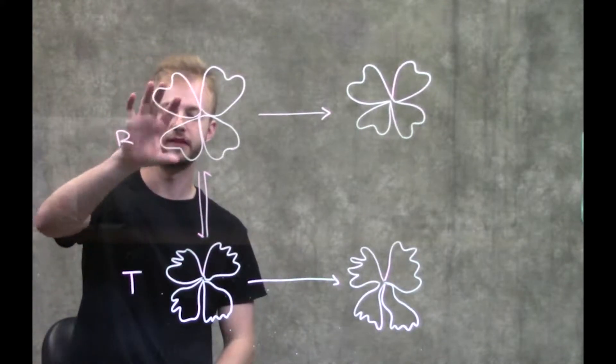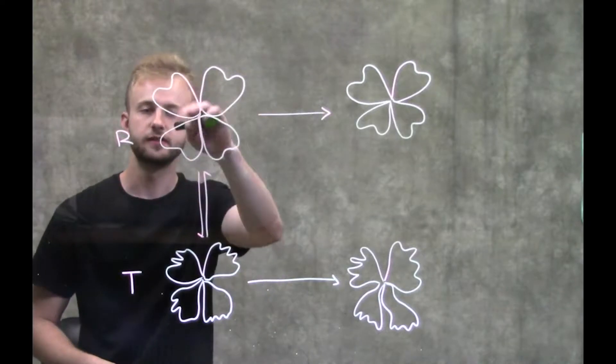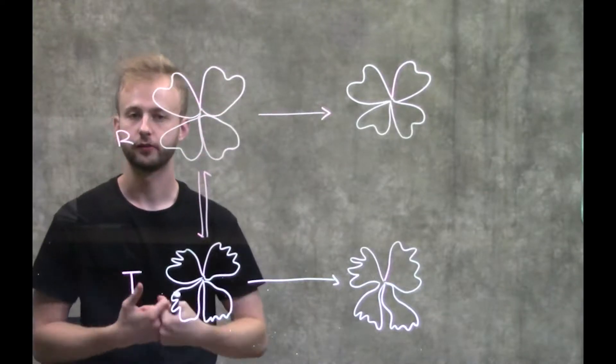For example, we'll have this enzyme right here. This enzyme has four subunits that are all interacting with one another.